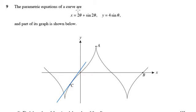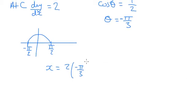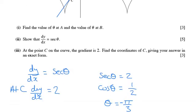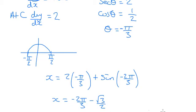So we can then put negative π over 3 into here and here to work out the x and y coordinates. So x is 2 tan of negative π over 3 plus sine of 2θ. So that's negative 2π over 3 as well.